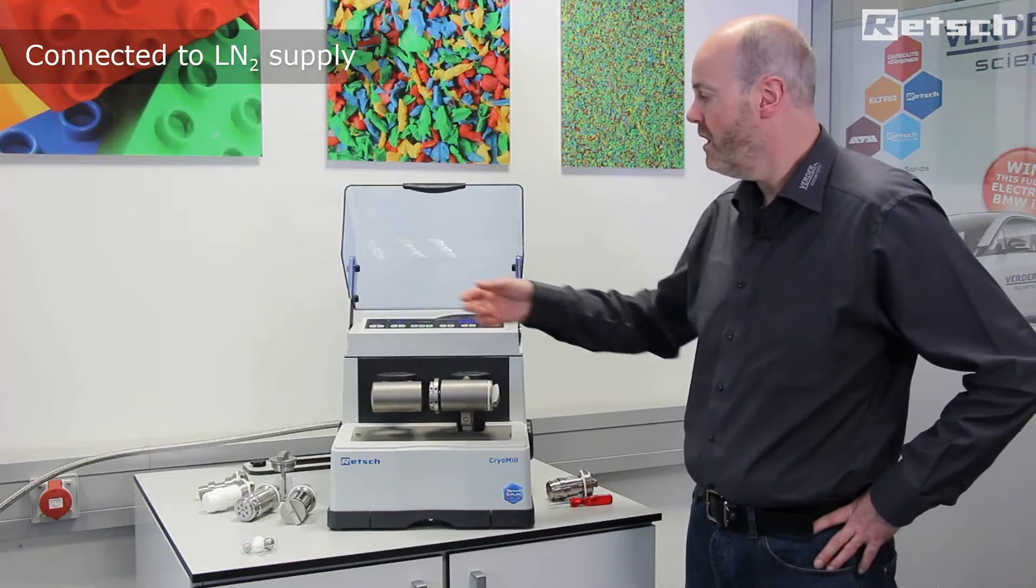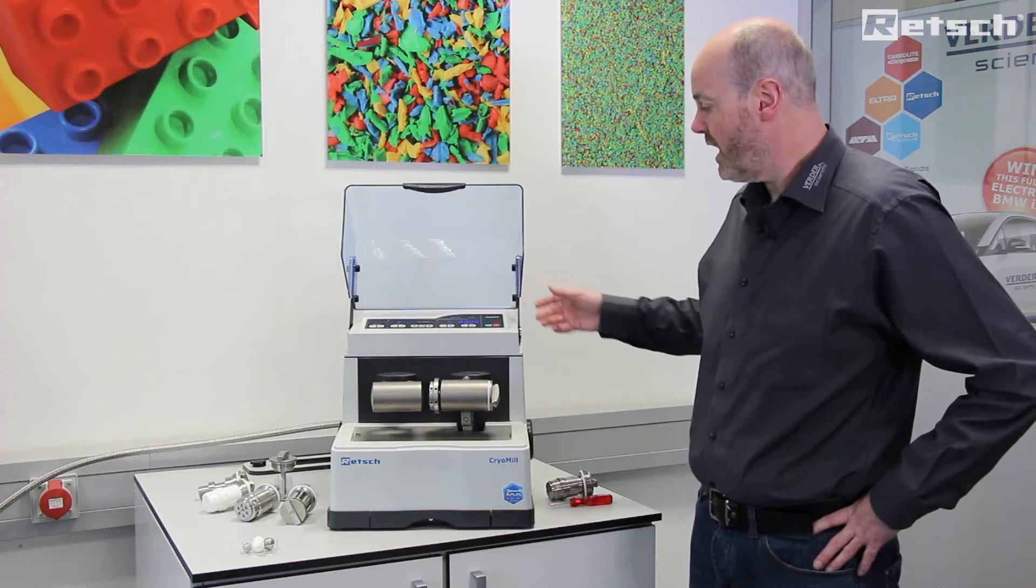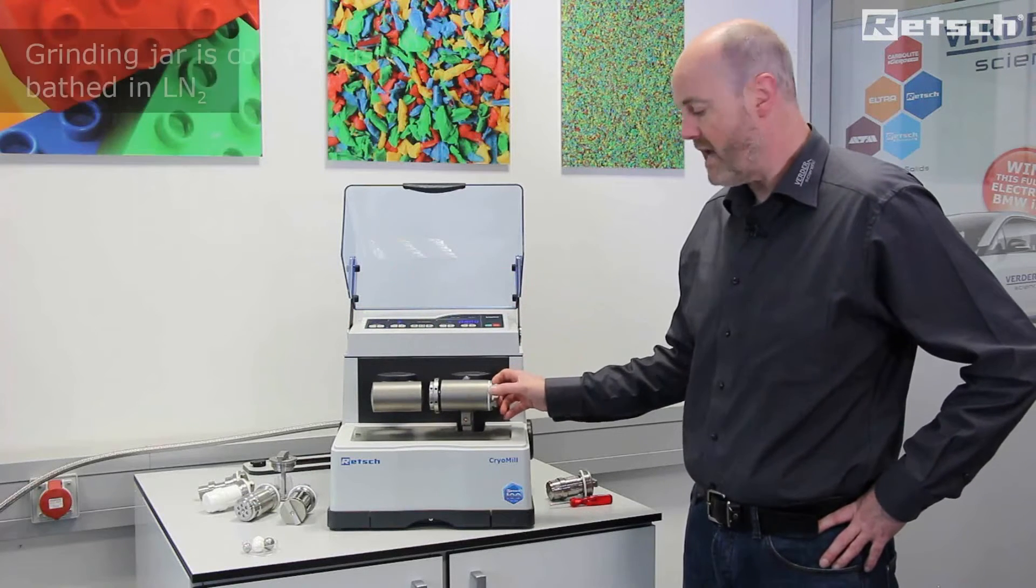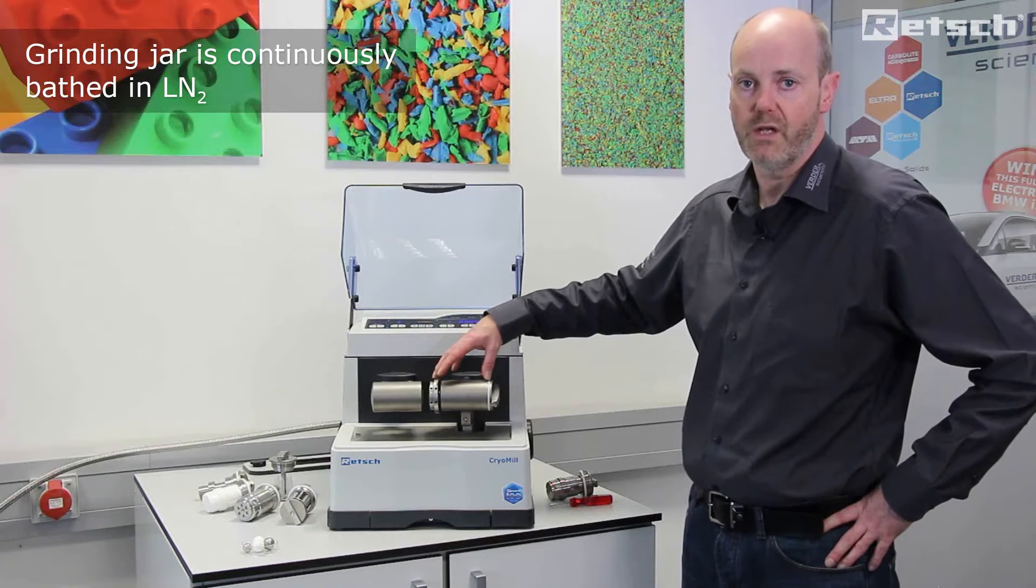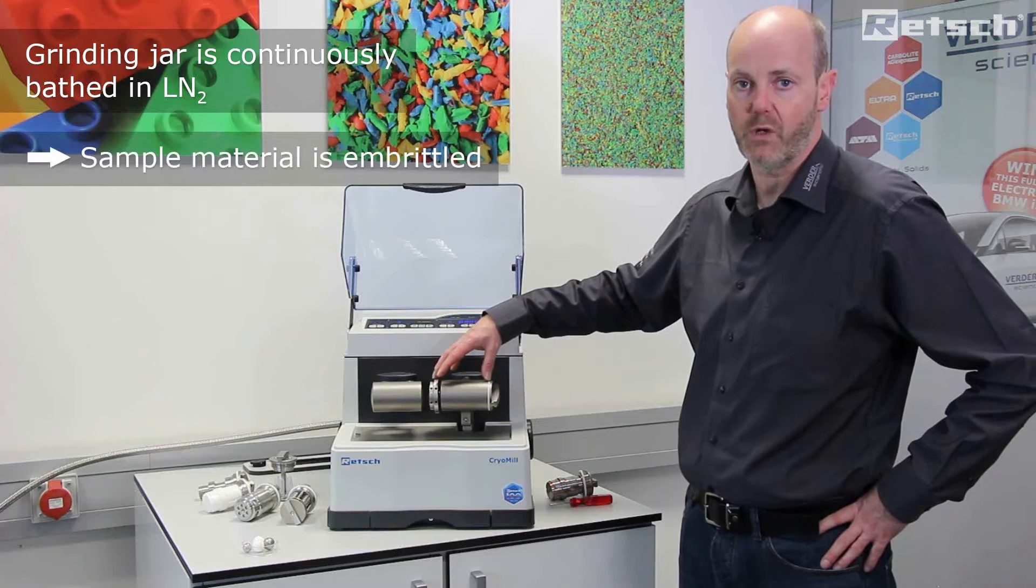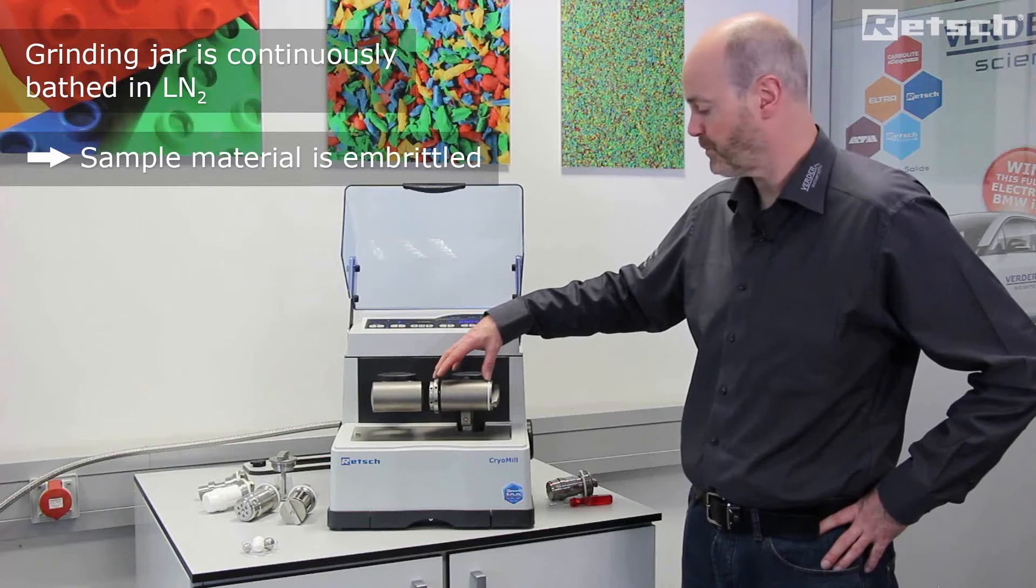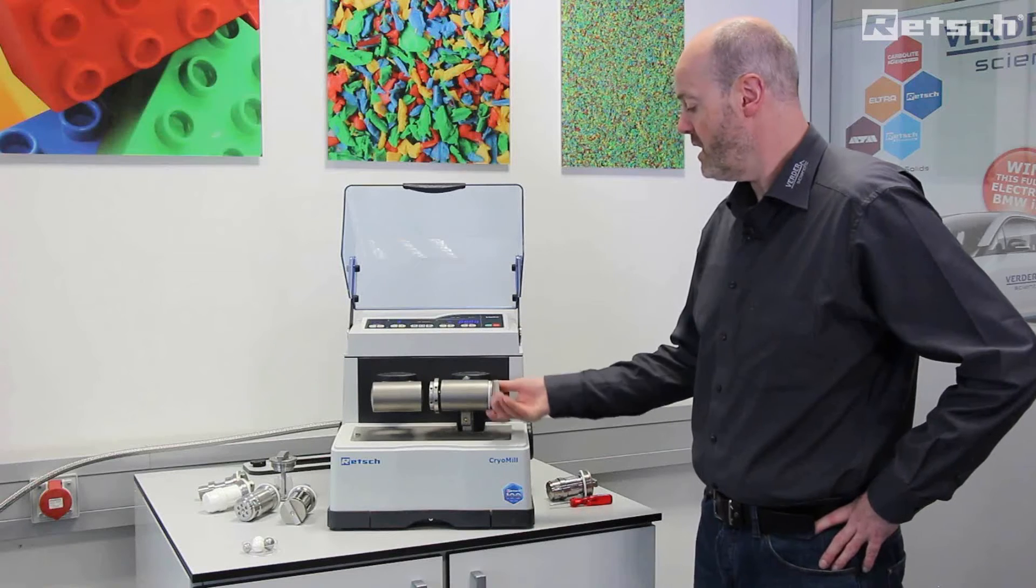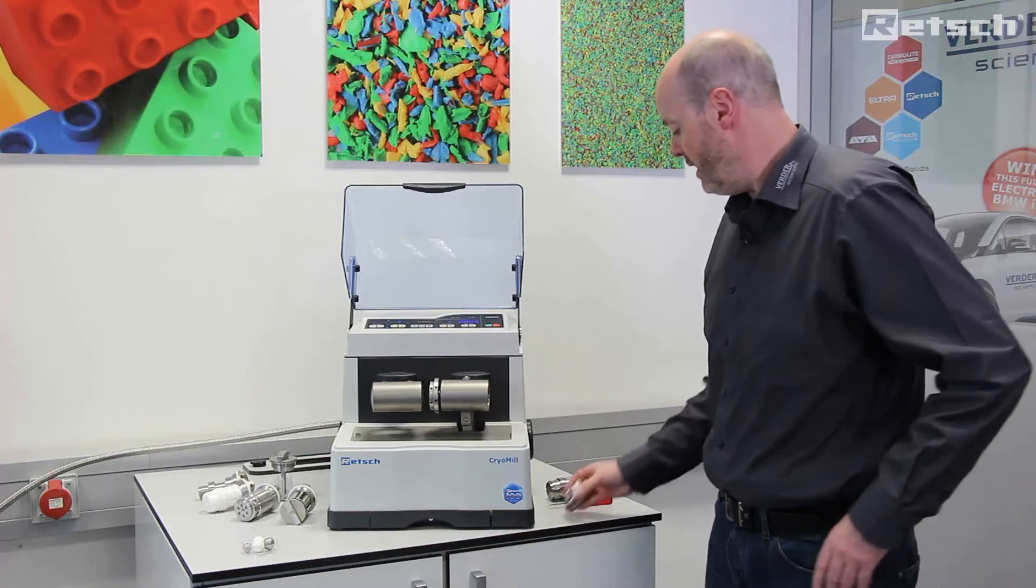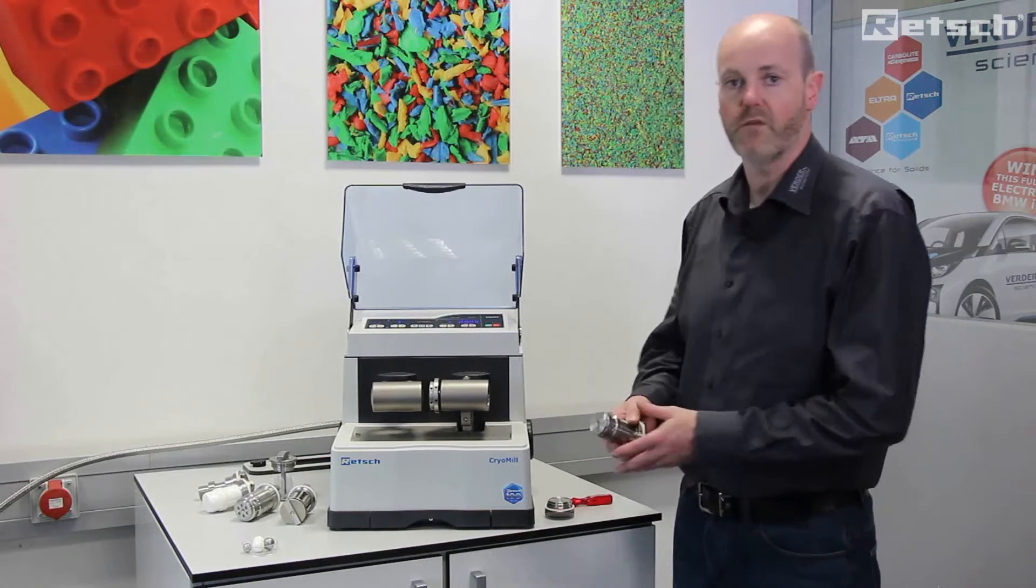The liquid nitrogen circulates around the instrument and bathes the grinding jar continuously in liquid nitrogen, thus embrittling the sample material and keeping it cold. The modus operandi of the CryoMill is identical to that of the mixer mill.